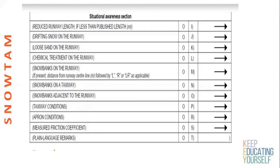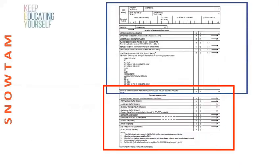The last two fields relate to measured friction coefficient — this is in a state-approved format and will vary from country to country, so we are not discussing it here. The last field is plain language remarks. All fields in the situational awareness section are optional except chemical treatment on the runway. This completes the full SNOWTAM.